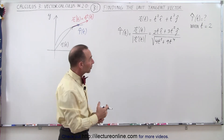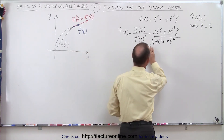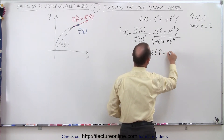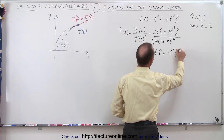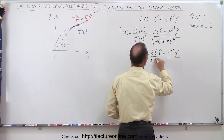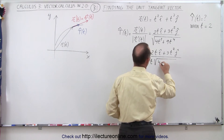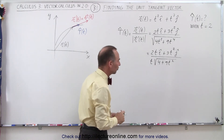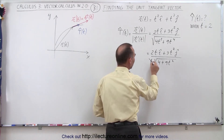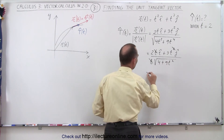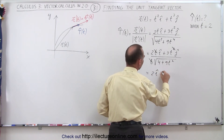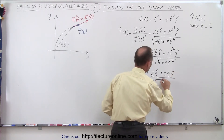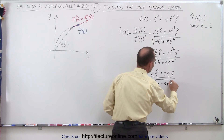It looks like we can factor out a t squared, so when we do that we get a t out here. This would be equal to 2t in the i direction plus 3t squared in the j direction, divided by t times the square root of 4 plus 9t squared. If we take the t squared outside the radical, that just becomes t, and then this t cancels with the t in the numerator components.